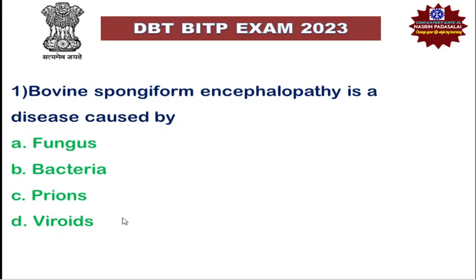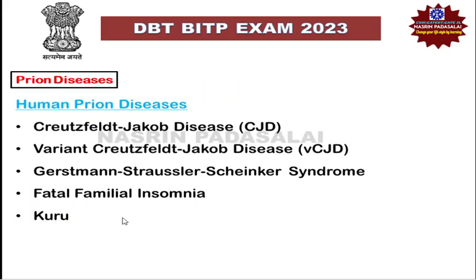Prions can easily transmit and spread by direct contact, casual contact, and by eating contaminated food with prion proteins, as well as through a few environmental factors. Human prion diseases include CJD, variant CJD, Gerstmann-Sträussler-Scheinker syndrome, fatal familial insomnia, and Kuru.